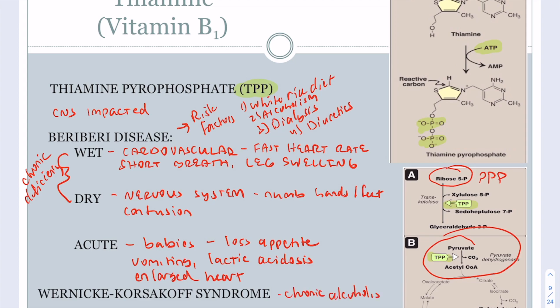Wernicke-Korsakoff syndrome is associated with chronic alcoholism. The lack of vitamin B1 can be caused by impaired absorption or dietary insufficiency.